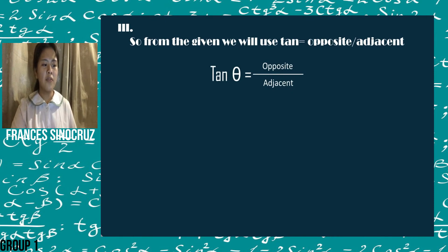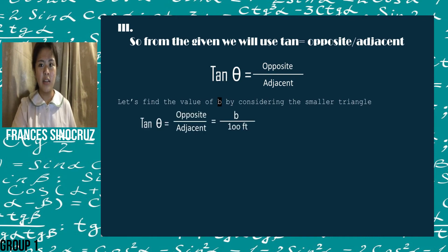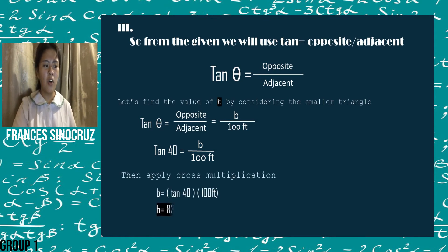Let's find the value of B by considering the smaller triangle. Let's now substitute the terms for the given to the formula. Tangent equals opposite over adjacent equals tangent 40 equals B over 100 feet. Then, with this problem, we will now cross-multiply, resulting to an answer of B equals 83.91 feet.